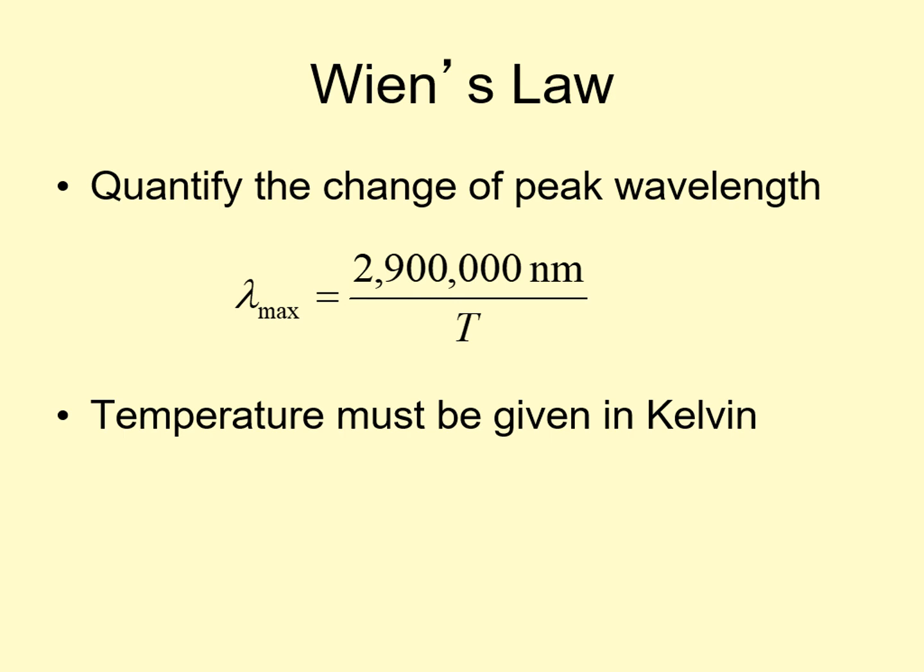Technically, the unit should probably be written out nanometers Kelvin, but for historical reasons, we usually leave the Kelvin out. This gives an answer in nanometers. Remember that a nanometer is a billionth of a meter. Visible light runs from 400 to 700 nanometers.